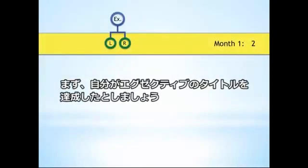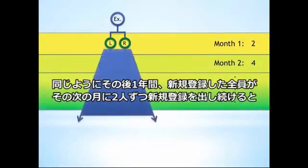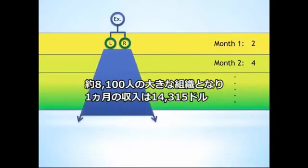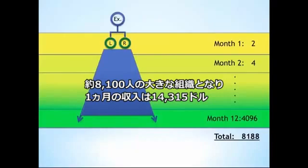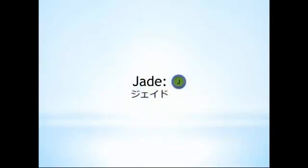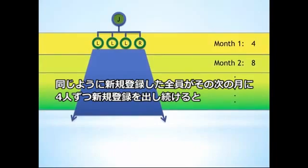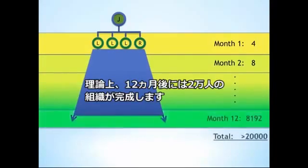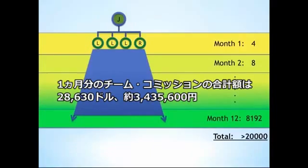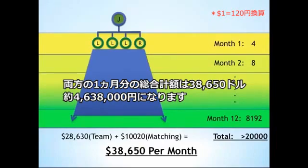Let's say you become an executive, and the following month each of your two people get two distributors to become executives themselves, and each new person gets two more the month after they came in. At the end of just one year, you'd have an organization with over 8,100 people generating $14,315 a month. At the Jade level, if you brought in four people structured three on one side and one on the other, with the same pattern, at the end of 12 months you'd have over 20,000 people earning a team commission check of $28,630 per month and matching bonuses of $10,020, for a total of $38,650 per month.